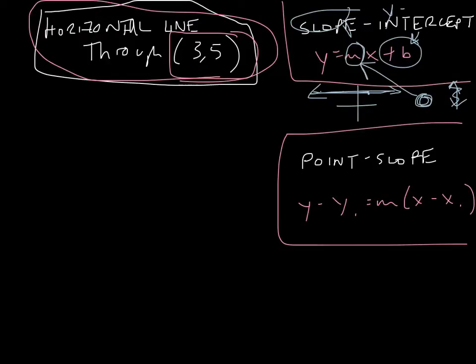So all we got to do is find out where it crosses the y-intercept. Usually you'd plug these two coordinates in for x and y and solve for b. This one's actually easier because we know it's a straight line. How far did we go up? We went over three and then up five, so if it's straight across, where is it going to cross? Right there at five.